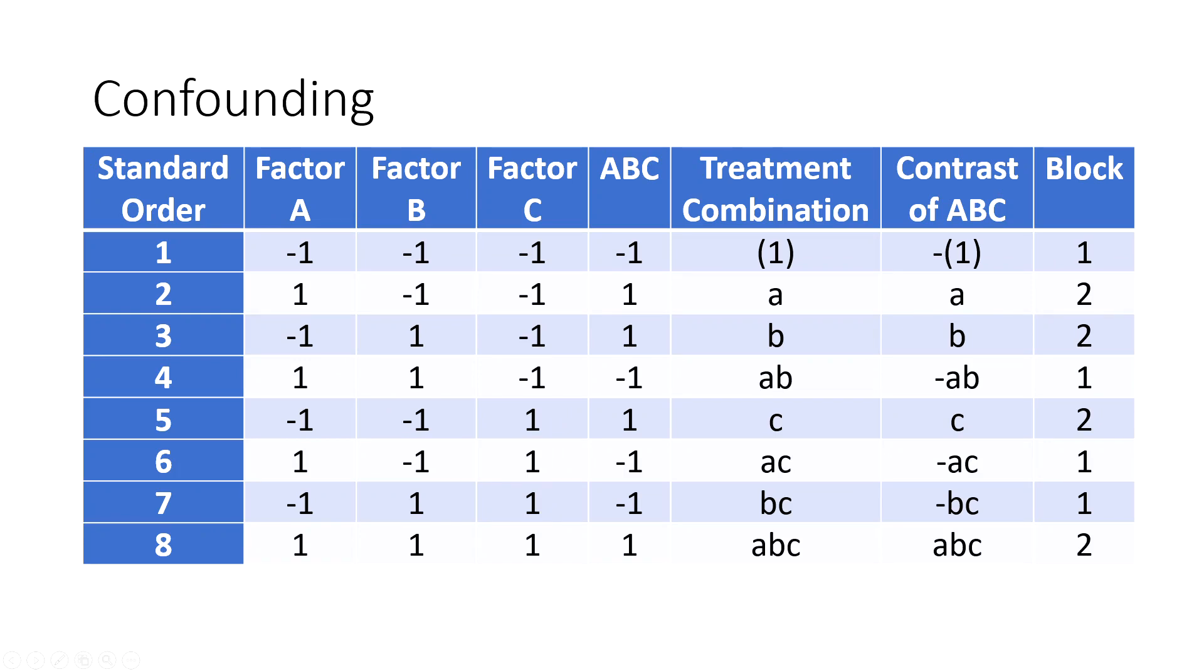Think about this same situation. Let's assume we can only collect four samples from a batch. For this two cube design—two levels for three factors which needs total eight experiments—however we can only collect four samples, four experimental units from a batch. Then we have to run these experiments from two batches and they should be treated as two blocks.